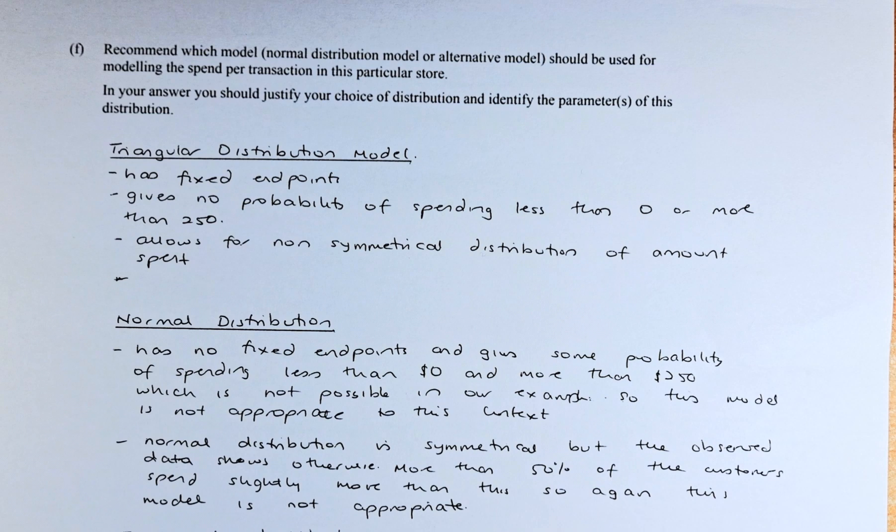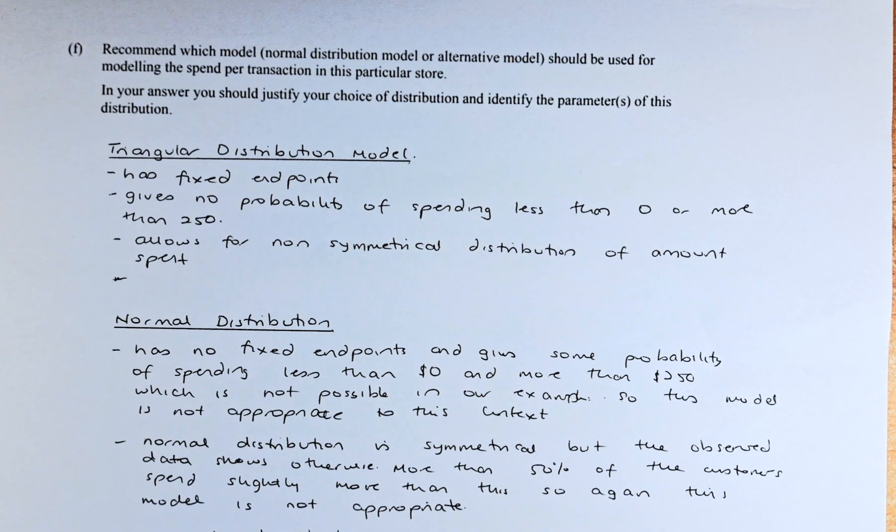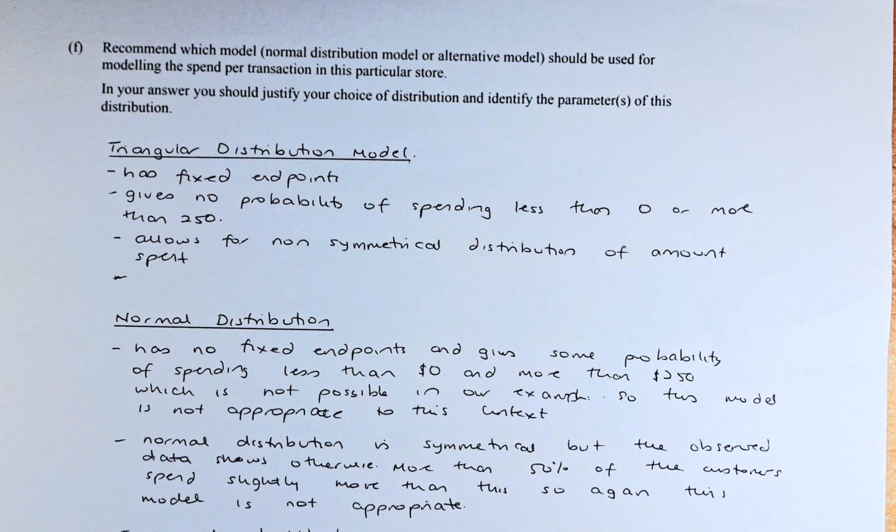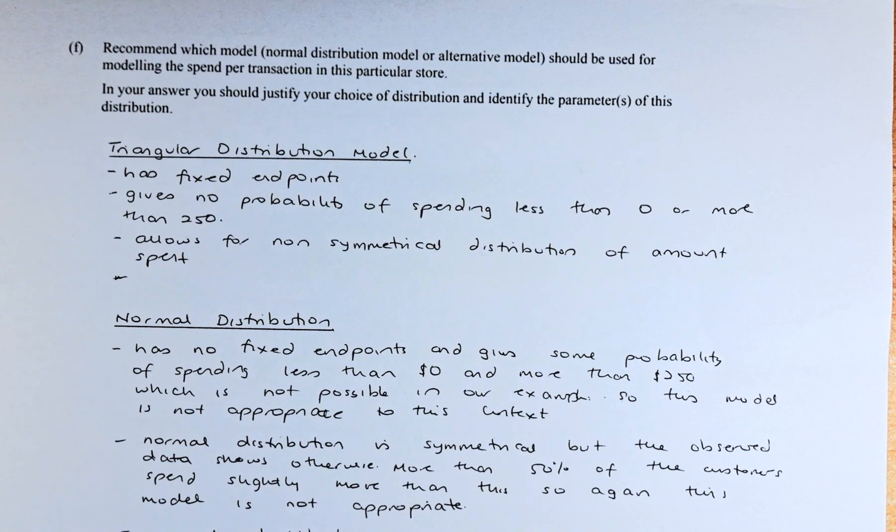Recommend which model, whether the normal distribution or the triangular - the alternative model we did was the triangular - should be used for modelling the spend per transaction in this particular store. In your answer, you should justify the choice of distribution and identify the parameters of this distribution.